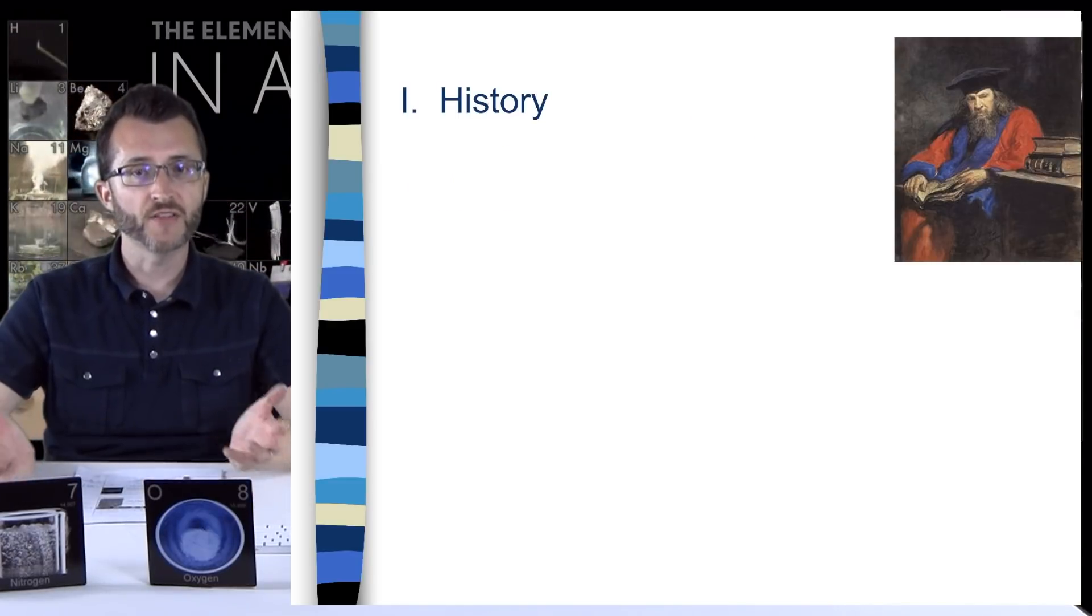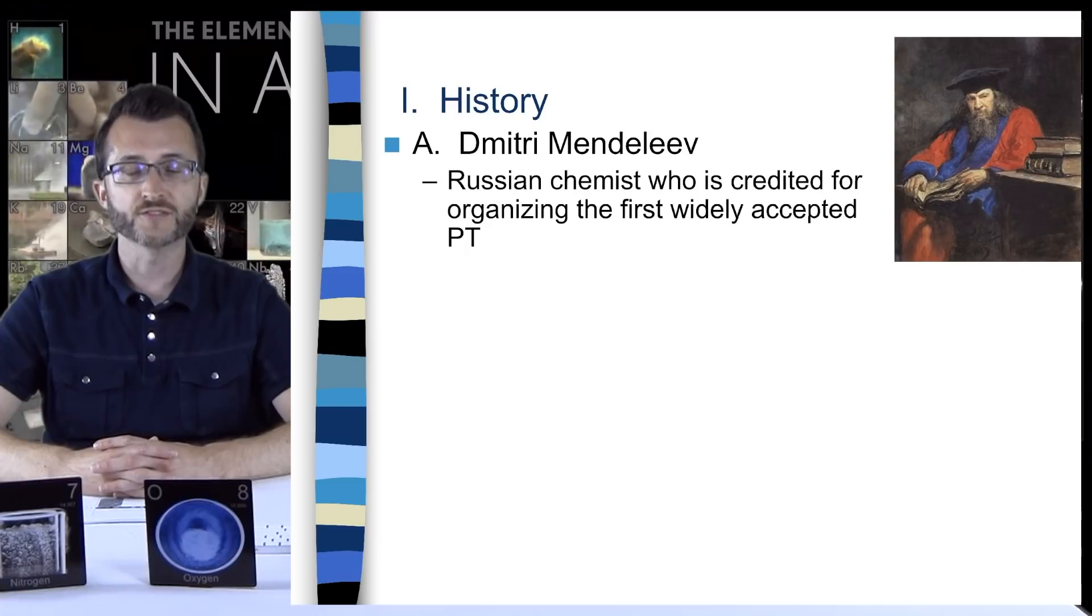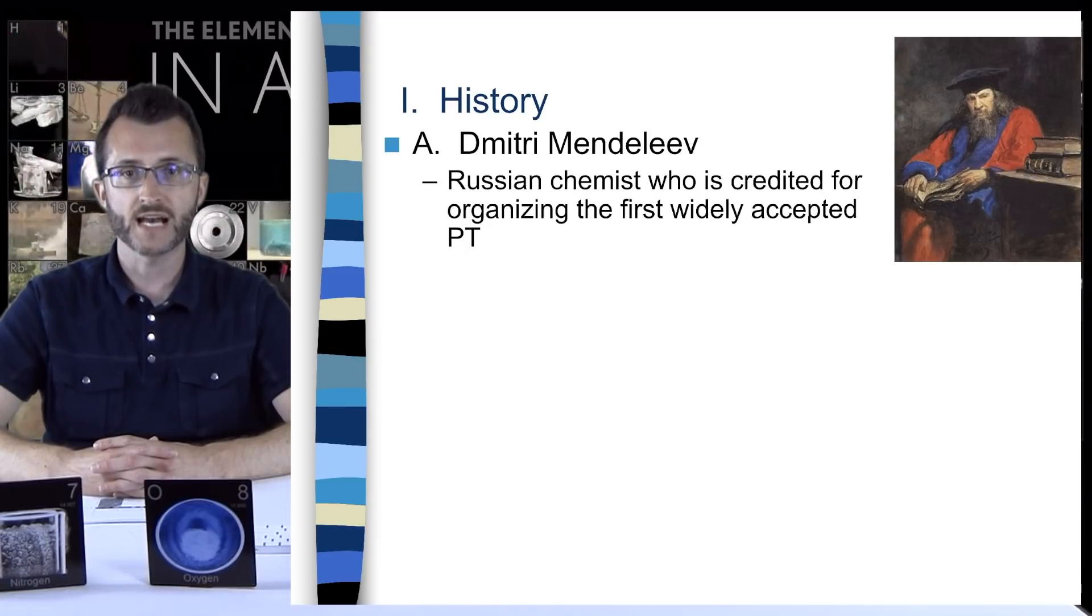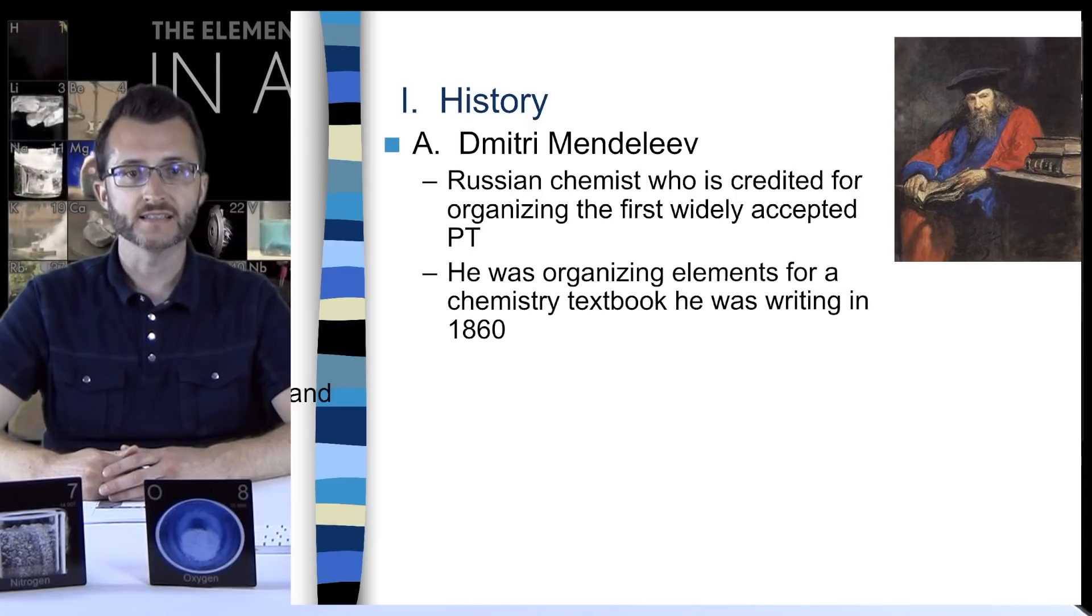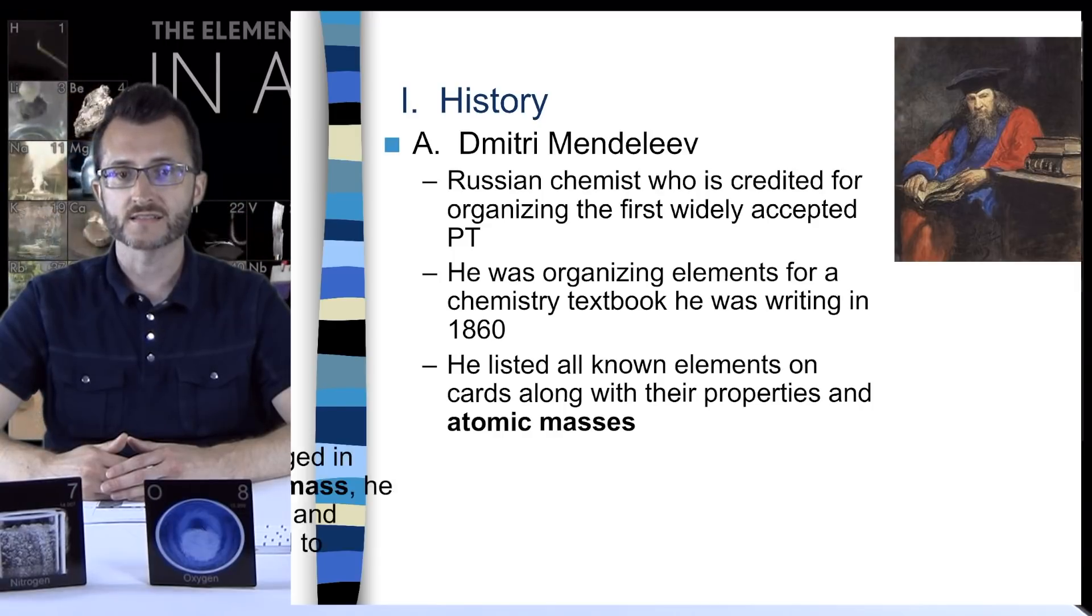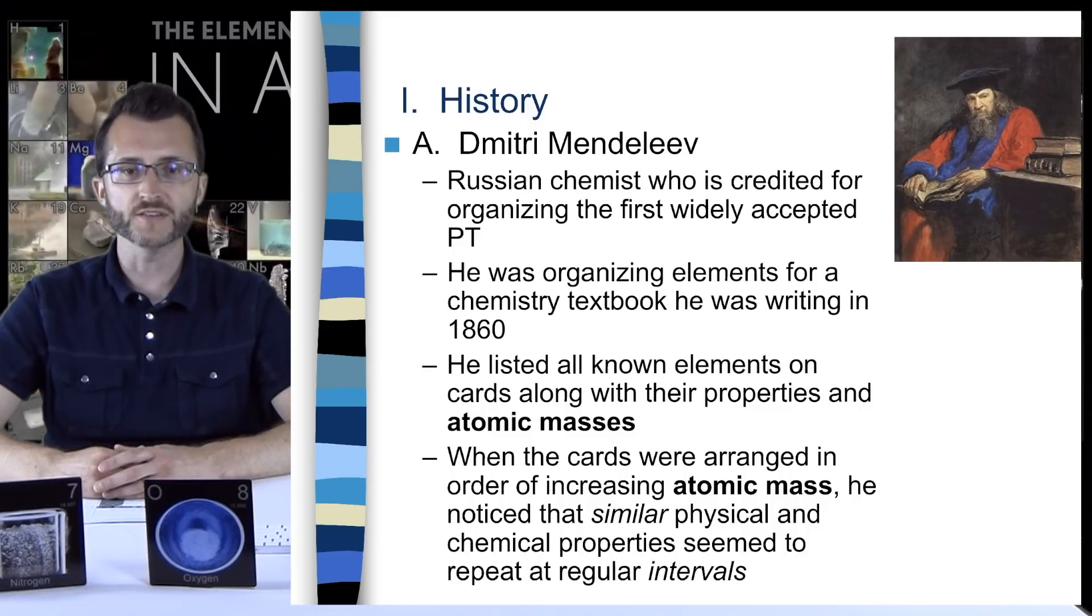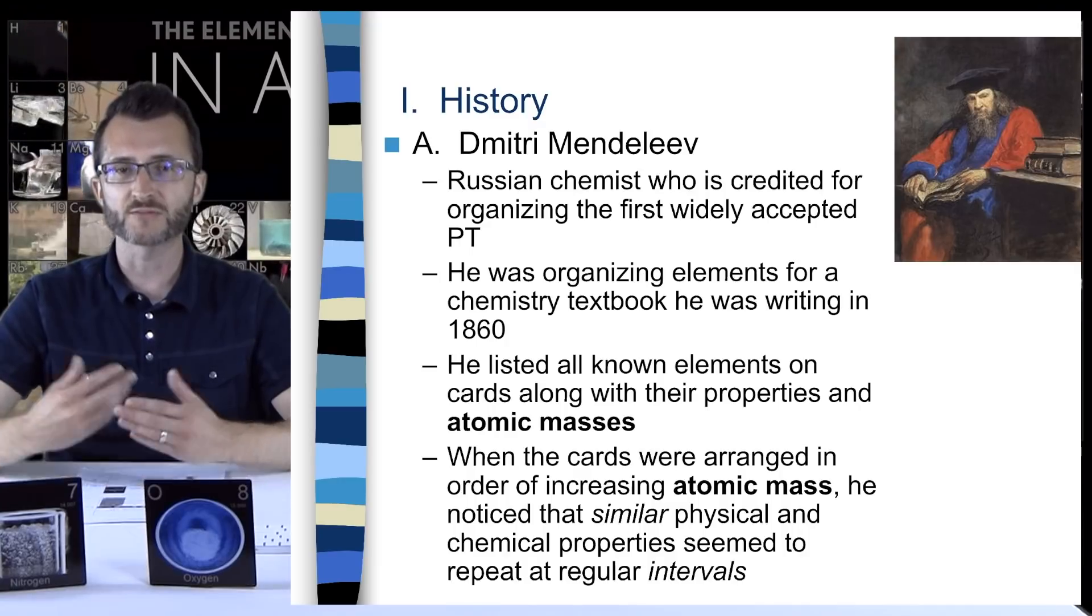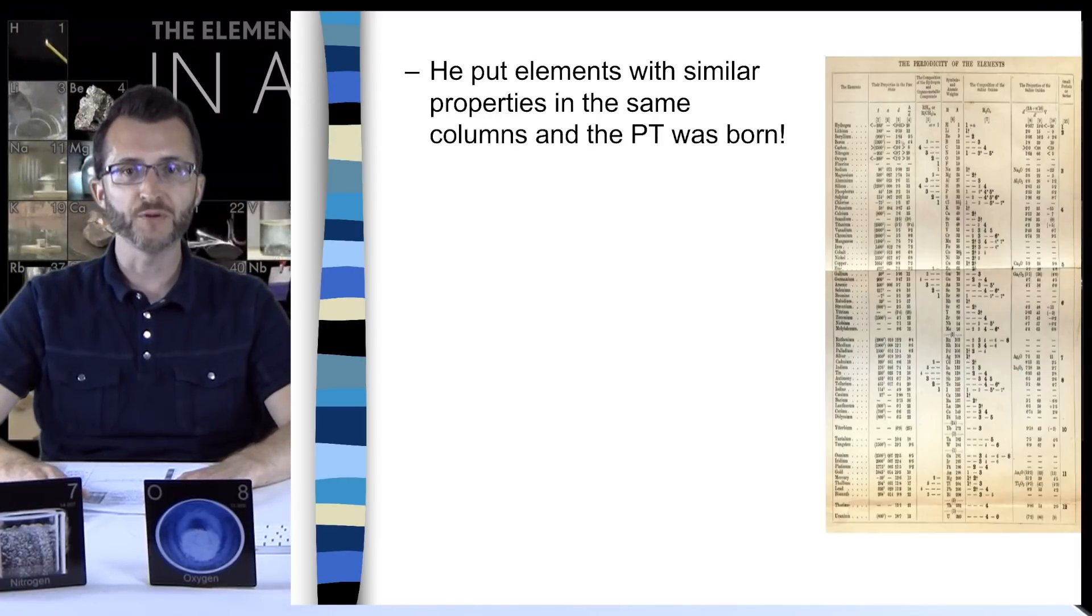Let's start with the history of how the periodic table was developed. Dmitry Mendeleev was a Russian chemist who is credited for organizing the first widely accepted periodic table. Although Mendeleev gets the bulk of the credit here, it's important to note that he was not the only scientist working on a periodic table at the time. He was organizing elements for a chemistry textbook he was writing in 1860. He listed all known elements on cards along with their properties and atomic masses. When the cards were arranged in order of increasing atomic mass, he noticed that similar physical and chemical properties seemed to repeat at regular intervals. He put elements with similar properties in the same columns and the periodic table was born.